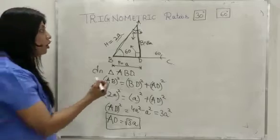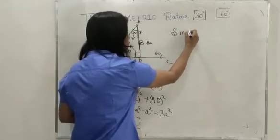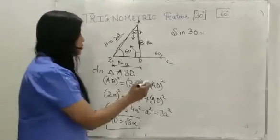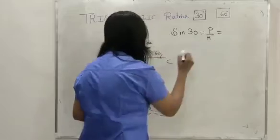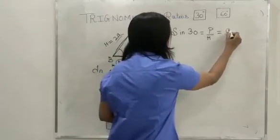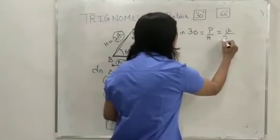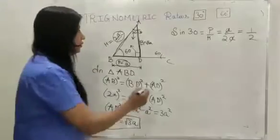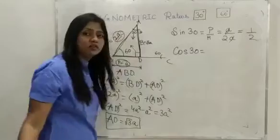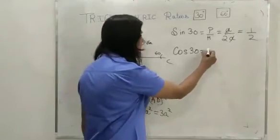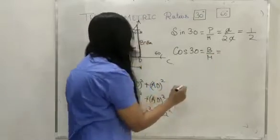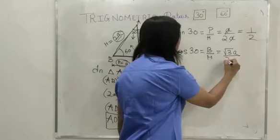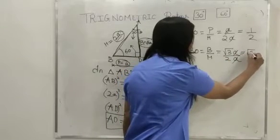Now let's find the 6 trigonometric ratios, starting with sin 30. Sin is perpendicular upon hypotenuse. The perpendicular is A and the hypotenuse is 2A, so the value of sin 30 is 1/2. Next, cos 30 — cos is base upon hypotenuse. The base is root 3A and the hypotenuse is 2A, so the value of cos 30 is root 3 over 2.